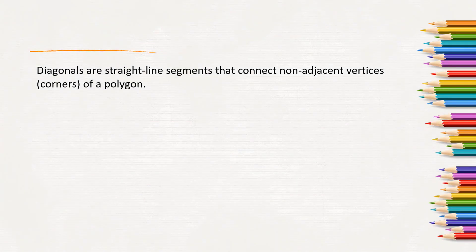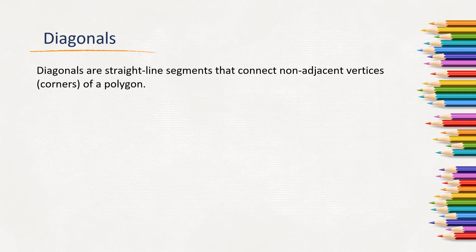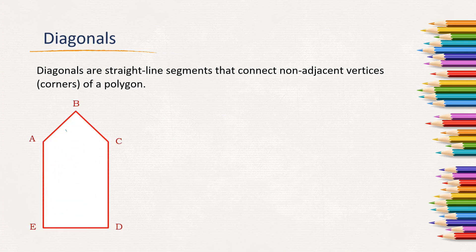Diagonals — what are diagonals? Diagonals are the straight line segments that connect non-adjacent vertices, meaning corners of a polygon that are not next to each other. When we connect two vertices which are not next to each other, it becomes a diagonal. We have to join any two vertices which are not already joined by a side.